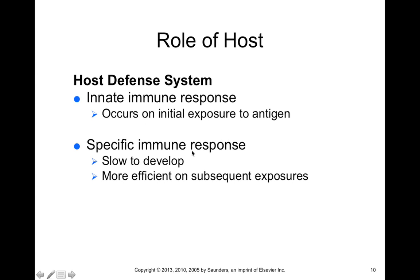The specific immune response is also called adaptive immunity. Specific or adaptive immunity is more slow to develop and only develops upon exposure to a substance or microorganism. However, after exposure, once these immune elements have been formed, your immune system can more efficiently remove those microorganisms on subsequent exposures. We'll talk more about this specific immune response in future chapters.